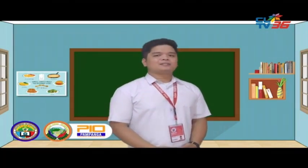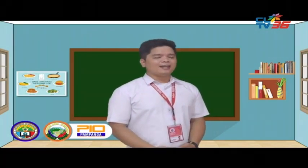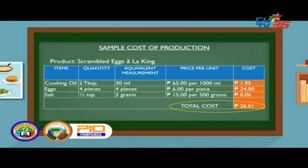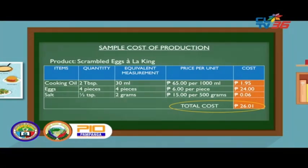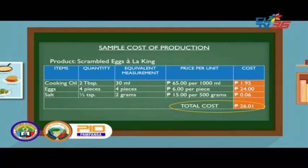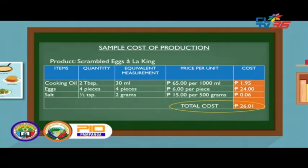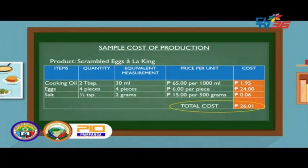Our product: scrambled eggs ala king. You will need the following items: cooking oil, eggs, and salt. For cooking oil, you need 2 tablespoons, which is equivalent to 30 ml. The price per unit of cooking oil in the market is 65 pesos per 1,000 ml. To get the price per ml of cooking oil, divide 65 by 1,000. Then multiply your answer to the equivalent measurement needed.